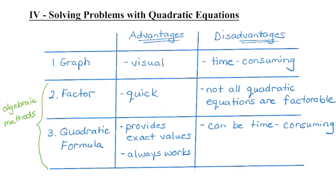There are advantages and disadvantages to each, as you've probably discovered. A graph is very visual — we should always do a sketch anyway just to get an idea of what's happening in our question. It can be time consuming; by the time you go through the calculator steps, that takes a little bit of time. Factoring is very fast, and if the quadratic equation is factorable — because remember not all are — then that's probably the fastest method.